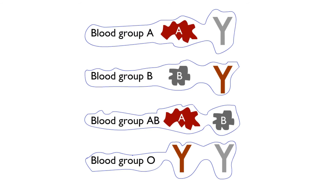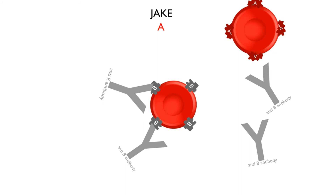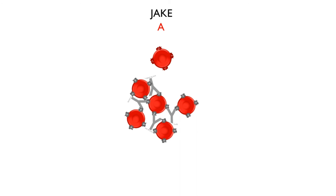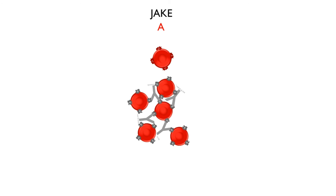Now, let's imagine Jake has blood group A and Paul has blood group B. If Paul donates blood to Jake, the following will happen: Paul's B antigen is unknown to Jake, so the NTB antibody in Jake's blood will recognize Paul's B antigen as a foreign substance, and an agglutination reaction will happen in Jake's body. This will result in the formation of blood clots and he will probably die from multi-organ failure and excessive destruction of the red blood cells. For the same reason, Jake cannot donate blood to Paul either.